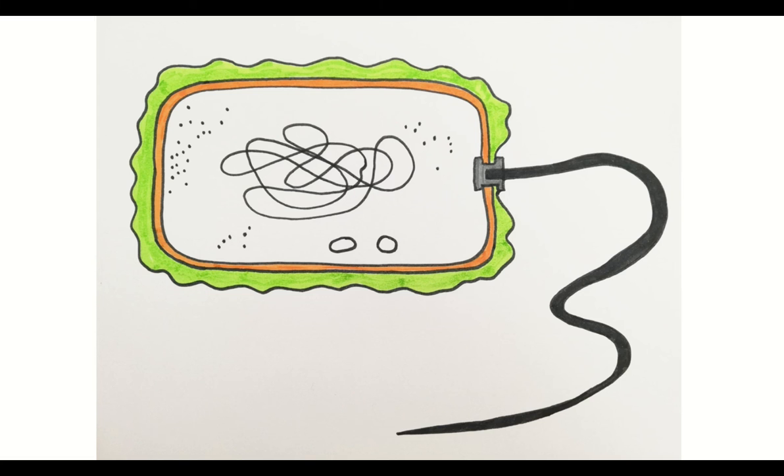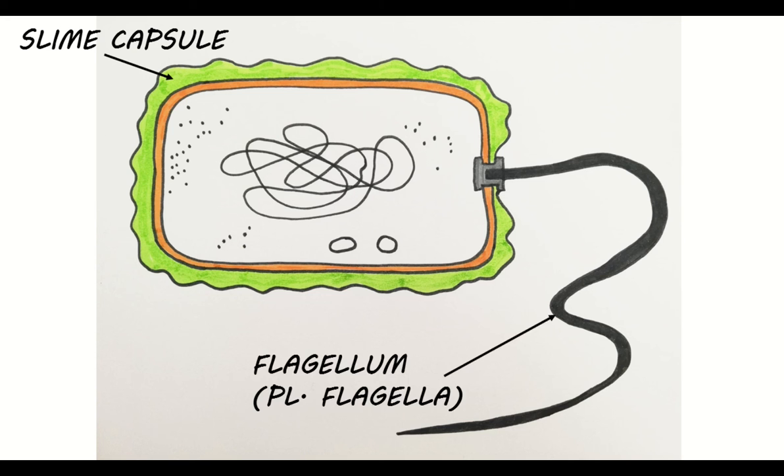Some bacteria are covered with a slimy capsule to protect them from their surroundings. And some bacteria have one or more flagella, which are whip-like tails that allow them to move.